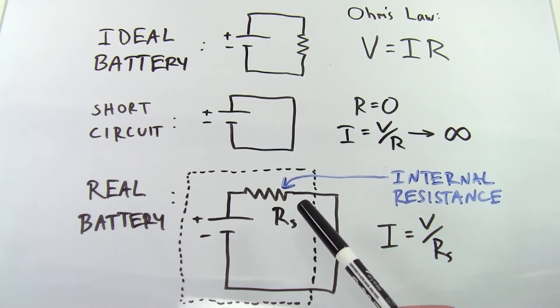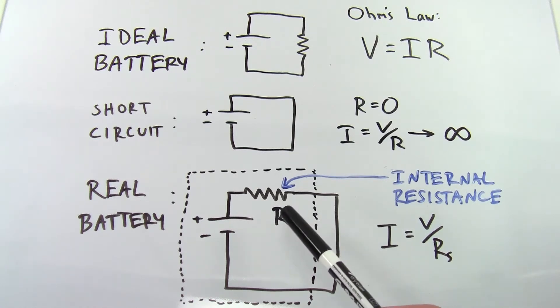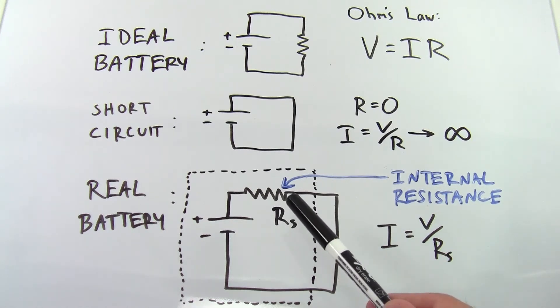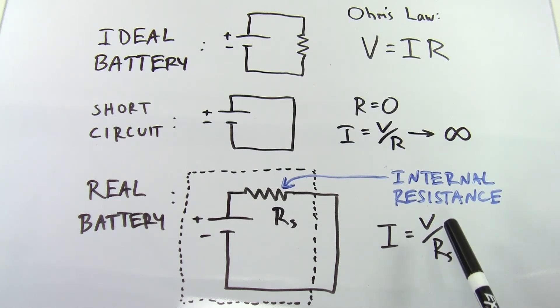The important takeaway for you, even if you don't understand exactly where this resistance comes from, is that now if you short-circuit the battery, there is still some resistance in series with the voltage source, so mathematically you do not get an infinite current. Instead, you will get a current that's the voltage V divided by the internal resistance RS.